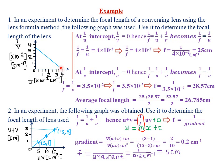From our graph, the 1/u intercept — the point where the graph cuts the 1/u axis — is at 0.4. Therefore, 1/f = 1/u = 0.4. But for any value along the 1/u axis, you must multiply by 10 to the power negative 2, in per centimeters. Therefore, 1/f = 4 × 10⁻² per centimeter.